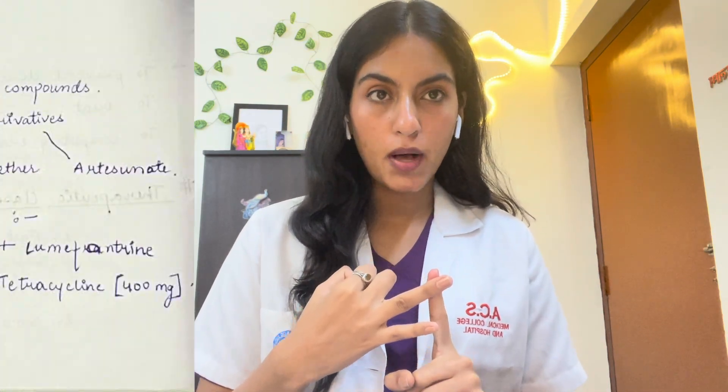There are some other anti-malarial drugs: amodiaquin, piperaquin, mefloquine, quinine, primaquine, tafenoquine, bulaquine, atovaquone, pyrimethamine, proguanil, halofantrine, artemisinin and compounds. Artemisinin derivatives include artemether, arteether, and artesunate. Combined drugs combine two or more drugs for a particular treatment — when chloroquine doesn't work, we use combined drugs. Examples are artemether and lumefantrine, and the second is artemisinin and tetracycline, where tetracycline is used at 400mg.